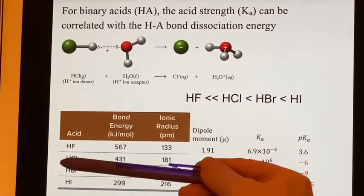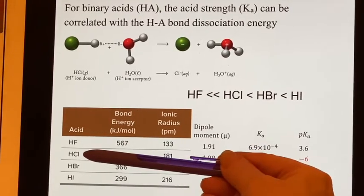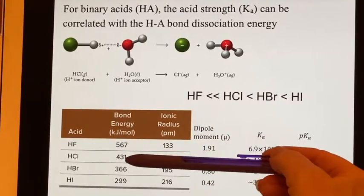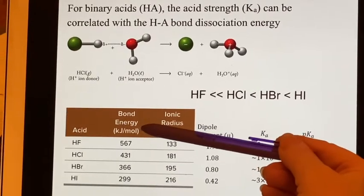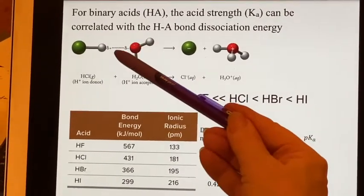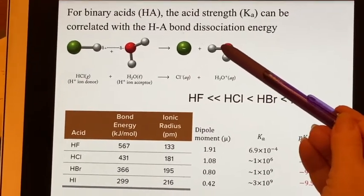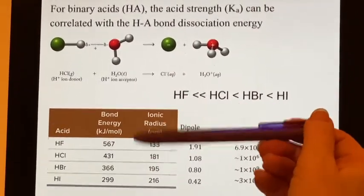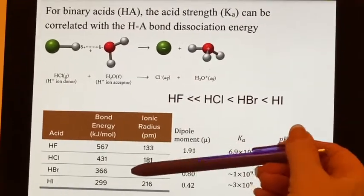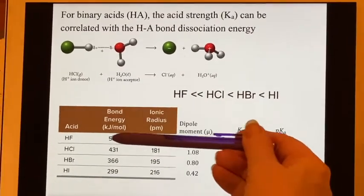So if you stop and think about it, when you break a bond between hydrogen and chlorine, you have to put in 431 kilojoules per mole. And when it forms that bond to the oxygen, it's going to be the recipient.